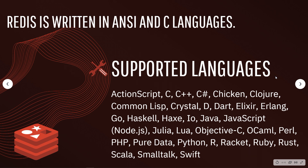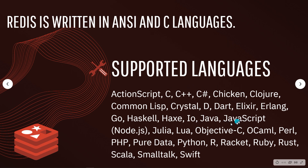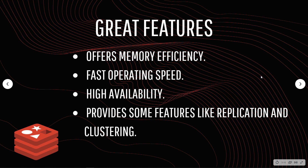Redis is written in C and C++ languages. The list of supported languages includes ActionScript, C, C++, C#, Node.js, Lua, Haskell, Go, Objective-C, Swift, Python, PHP — basically all languages you can think of. Some great features of Redis include memory efficiency, fast operating speed, high availability, and features like replication and clustering.